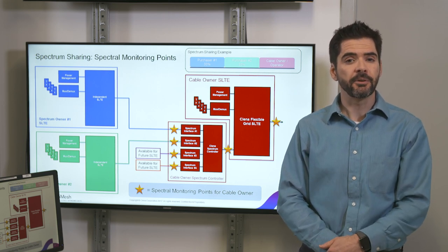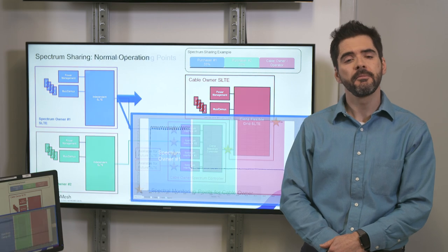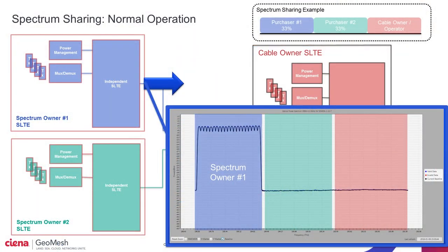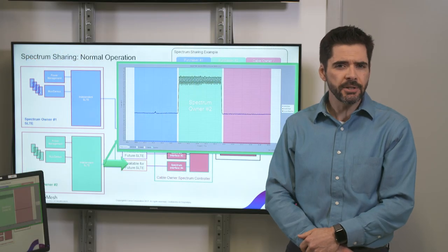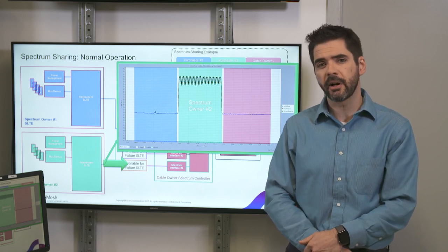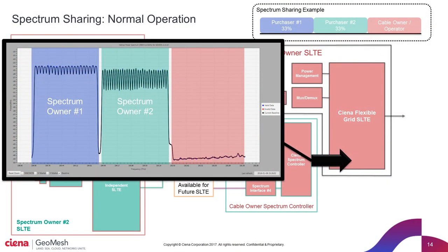Now let's start the demonstration by looking at the optical spectrum at each of the major interfaces. Spectrum owner number one has been allocated the blue end of the spectrum. Spectrum owner number two has been allocated the middle of the spectrum. Note that each of these SLTEs are only providing light within their allocated spectral range. At the output of the spectrum controller, the outputs from each spectrum owner have been successfully combined, while the spectrum allocated to the cable owner is still empty as intended.